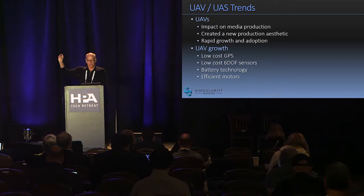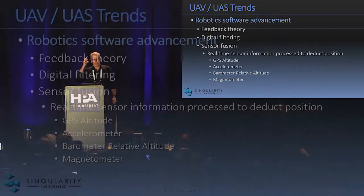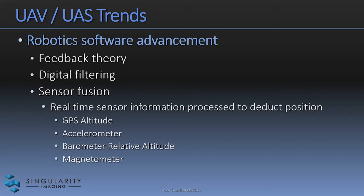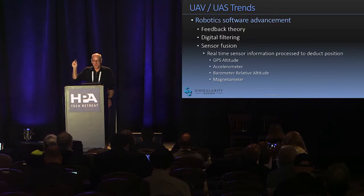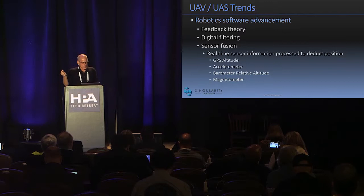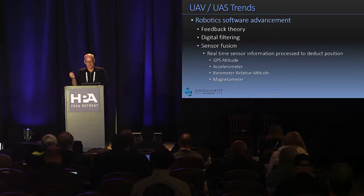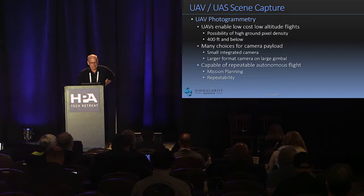There's the hardware, and of course there's the software. This is core robotic technology — software feedback theory, digital filtering, sensor fusion — the ability to take input from GPS altitude, barometric altitude, the accelerometer, and the magnetometer and fuse that information together to determine your position. This control stack for a drone costs about thirty or forty dollars and represents what was formerly six figures of military technology in a tiny little thing.